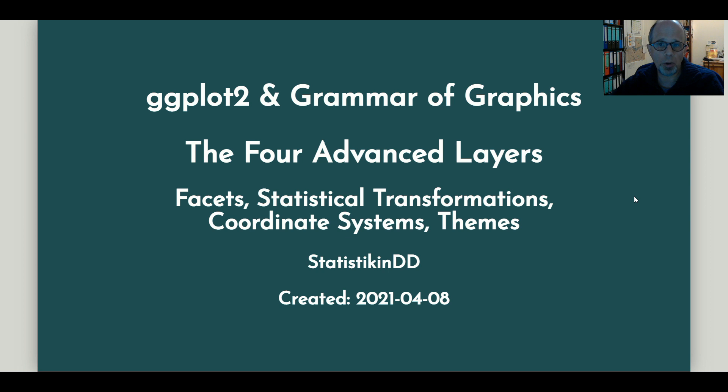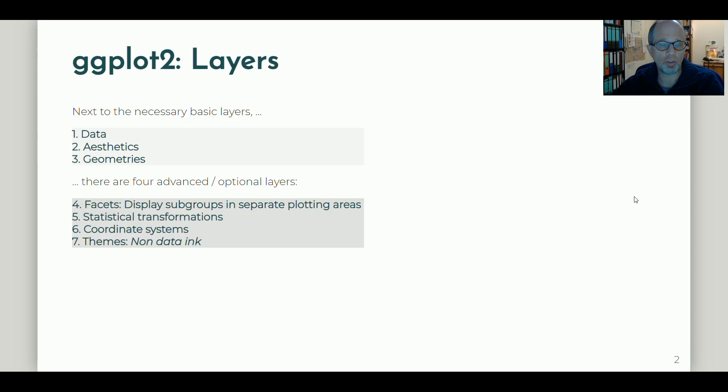If you're new to ggplot2 and you don't know about the grammar of graphics, you might want to watch the previous video that is also linked in the description, where it gave a quick introduction to the grammar of graphics and focused on the three basic layers. There are seven layers in total in ggplot2 and the grammar of graphics, and the three basic layers need to be specified for each plot.